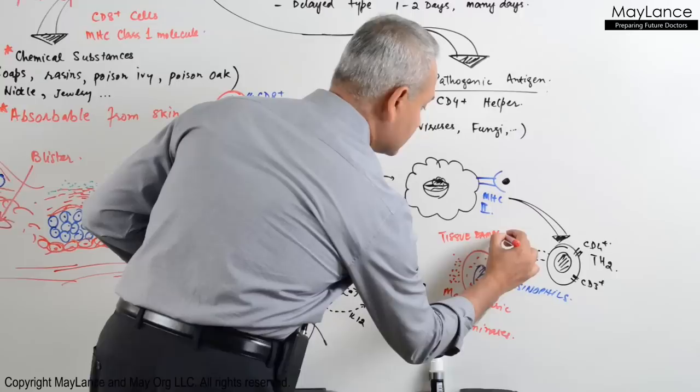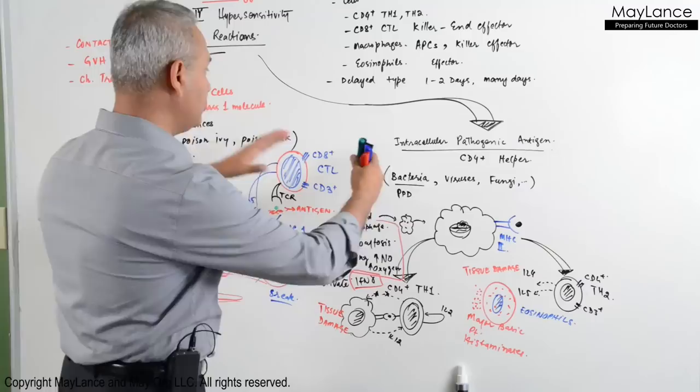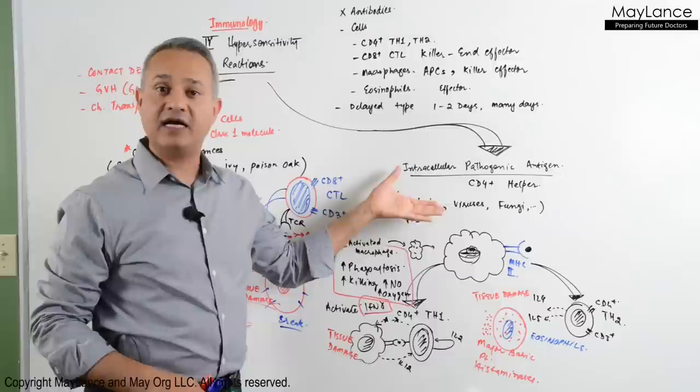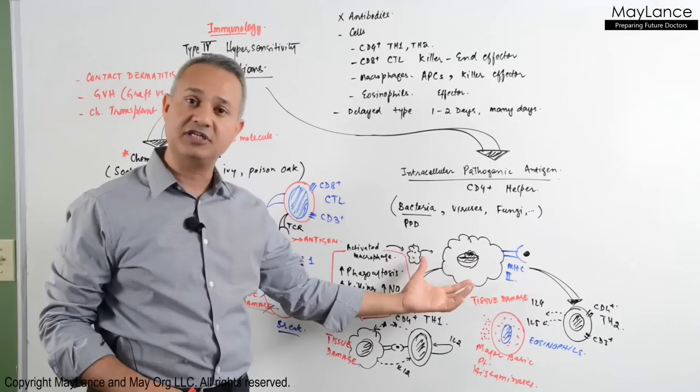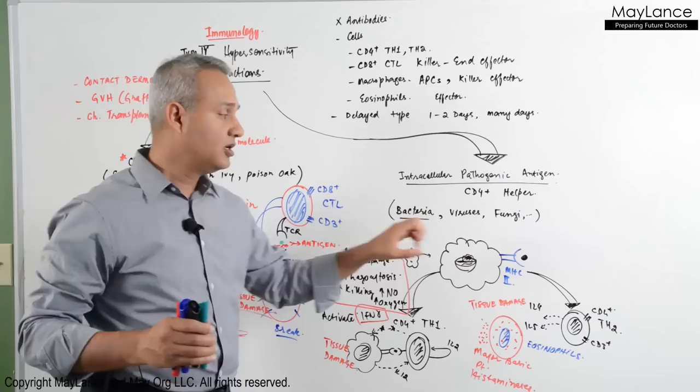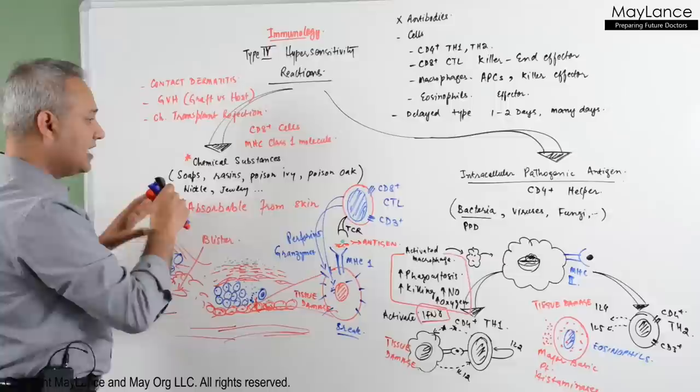Looking at the bigger picture: type 4 hypersensitivity has two subtypes. One involves PPD-type reactions where macrophages and CD4 helper cells activating the macrophages is the mechanism. In the other — contact dermatitis — MHC class 1 presentation and cytotoxic T lymphocytes is the mechanism.